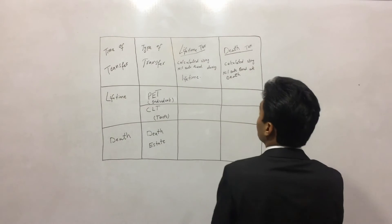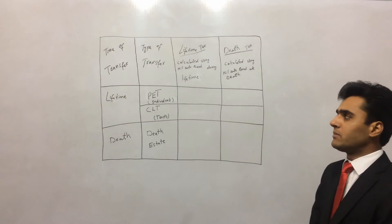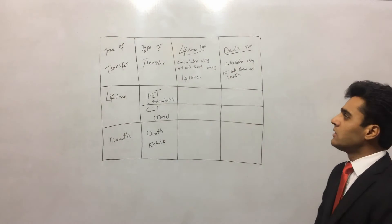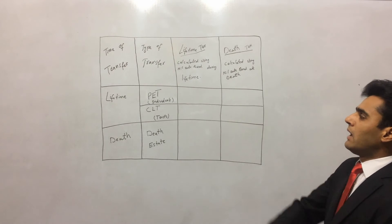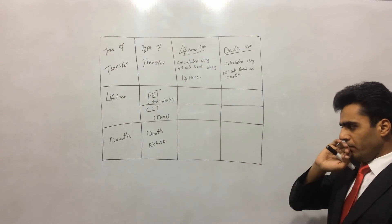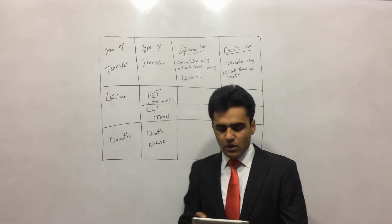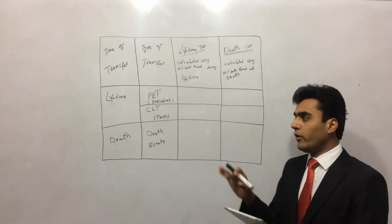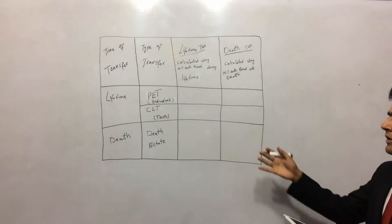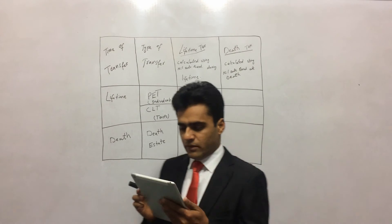The table also covers lifetime tax and death tax — when we will have to pay lifetime tax and whether we have to pay death tax as well. Before we fill those out, let's go to our notes so that we can read them and fill in the spaces accordingly.